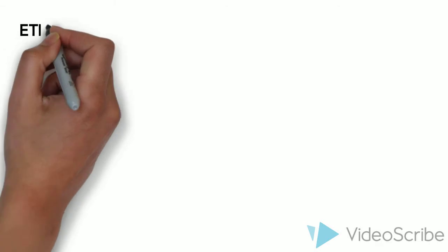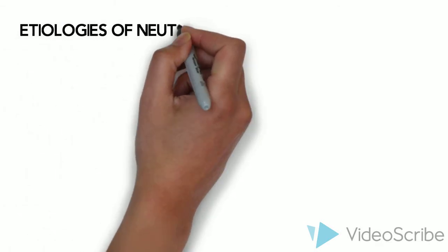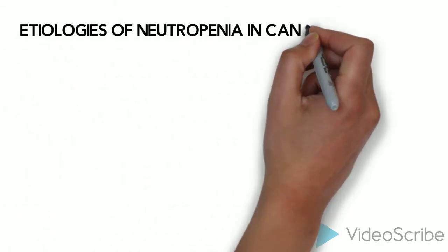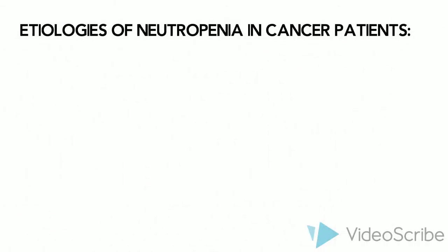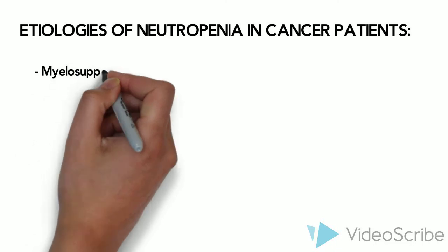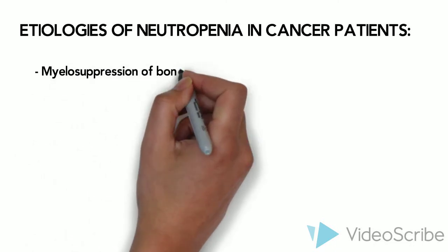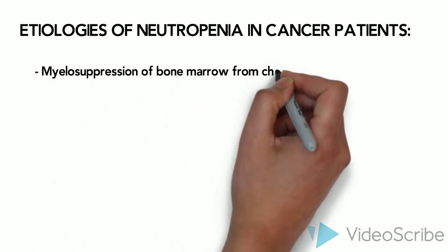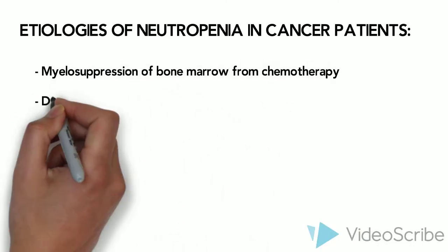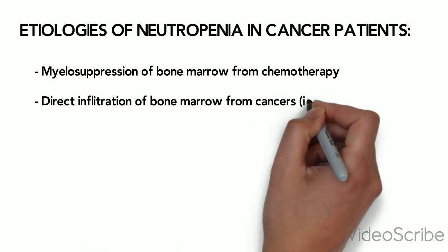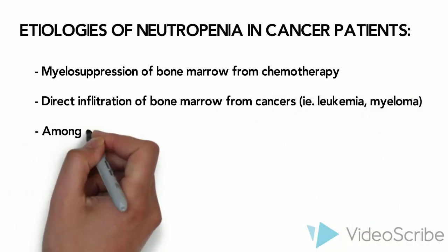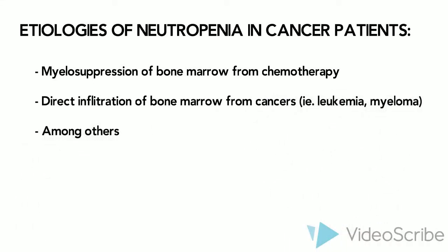In cancer patients, neutropenia can occur due to myelosuppression of the bone marrow from chemotherapy. It can also occur due to direct infiltration of the bone marrow from cancers such as leukemia and myeloma.